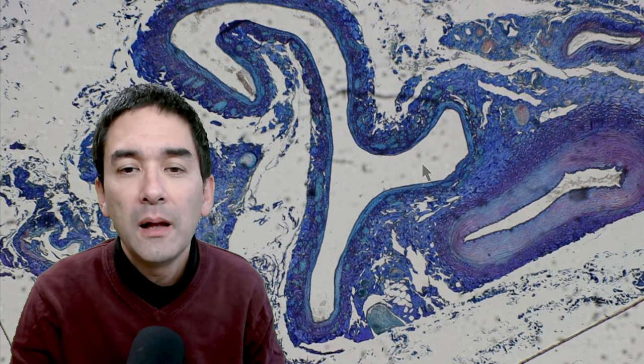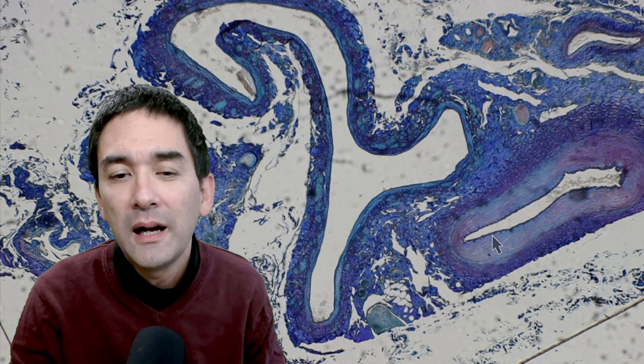Over here, this is the vein. And this one over here is an artery. Just look again at the thickness of the wall. Significant difference here.